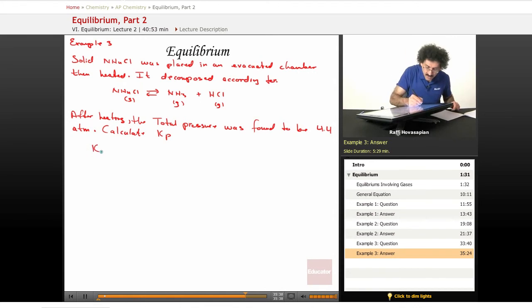So, the equilibrium expression here, based on this equation, well, we have a gas, we have a gas, and we have a solid. Solids don't show up in the equilibrium expression. So in this case, it's just these two. The coefficients are one. So we have Kp equals the partial pressure of NH3 gas times the partial pressure of HCl gas. That's it. If we find the partial pressures, we're done. We plug them in, we multiply them, and we're done.